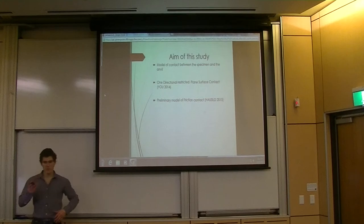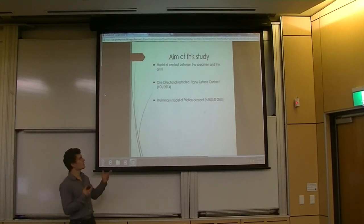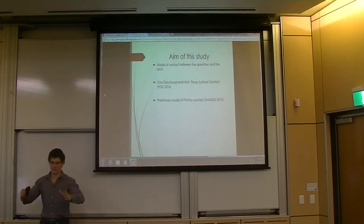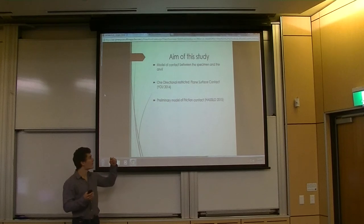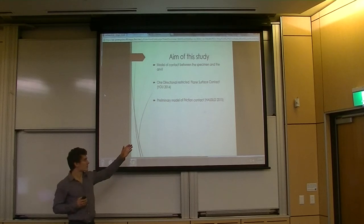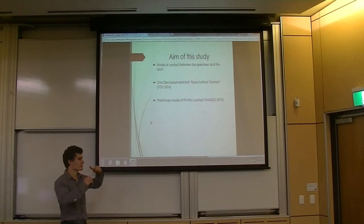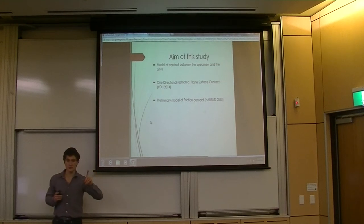So, now let's talk about the aim of the study. The aim of the study is to determine which is the best model to describe the simulation of the contact between the anvil and the specimen. So, those two studies have actually some contrary content. One is using a plane surface contact between the anvil and the specimen. And the other one is actually using a friction contact model to describe this phenomenon.